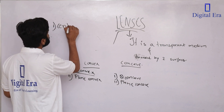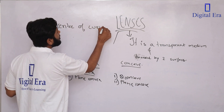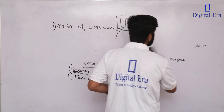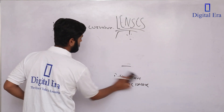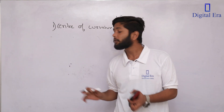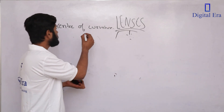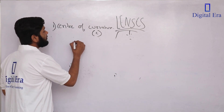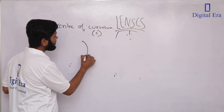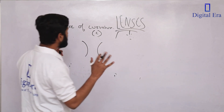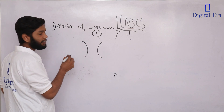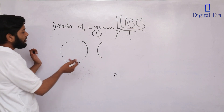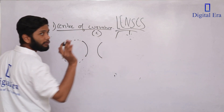Alright, let's start. First point is Center of Curvature, denoted by C. A lens generally has a curved surface — either this shape or that shape. Now, we draw an imaginary line to complete it into an imaginary circle.